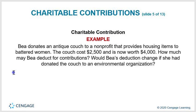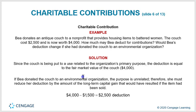Example: B donates an antique couch costing $2,500 now worth $4,000 to a nonprofit providing housing items to battered women. Since the couch is put to a use related to the organization's primary purpose, the deduction equals the fair market value of $4,000. If she had donated the couch to an environmental organization — an unrelated purpose — she must reduce the deduction by the long-term capital gain that would have resulted if the item were sold, giving a $2,500 deduction ($4,000 minus $1,500). The purpose of the organization and the use of the donated item significantly affect the deduction.